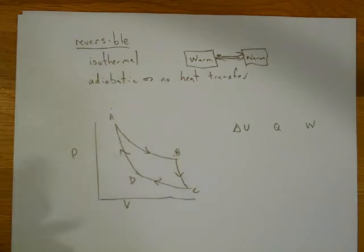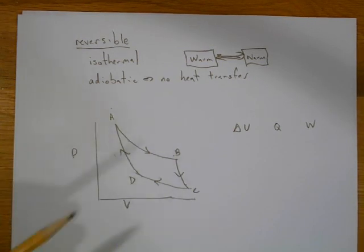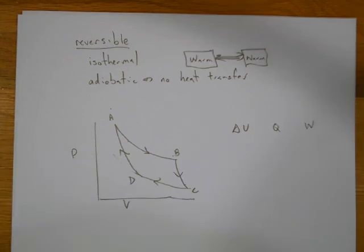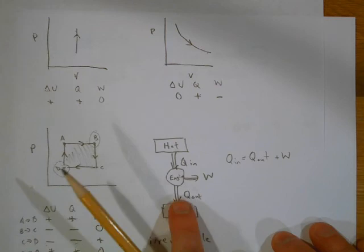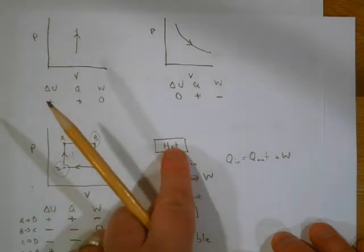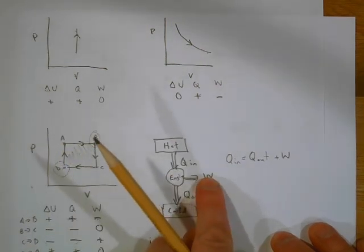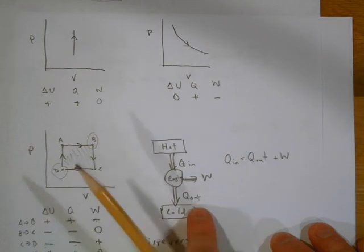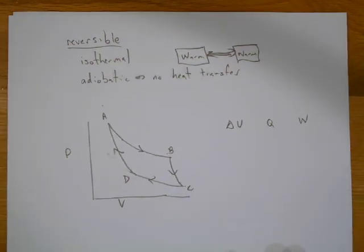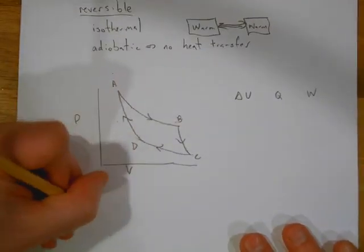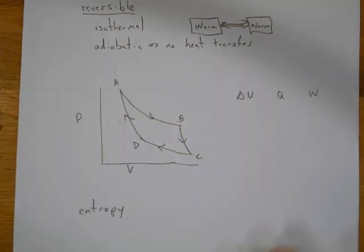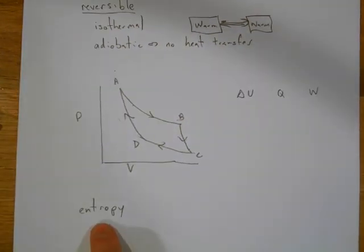The Carnot cycle on a PV diagram consists of: hot isothermal expansion, adiabatic expansion (steeper curve) to the cold isotherm, cold isothermal compression, and adiabatic compression back to the start. A reversible engine is the most efficient possible, but remember — you always have a Q_out. You can never achieve 100% efficiency.